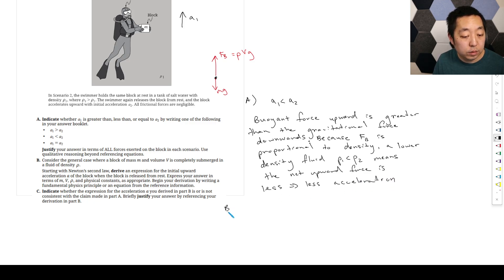Consider a general case where the block of mass M and volume V is completely submerged in fluid density rho. Starting with Newton's second law, derive an expression for the initial upward acceleration when the block is released from rest.